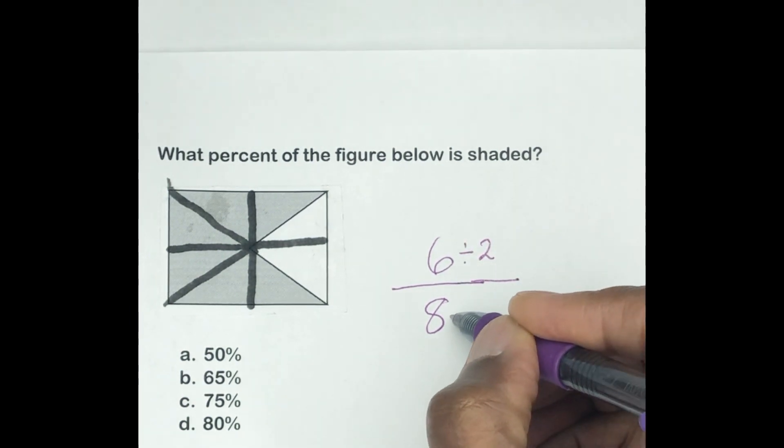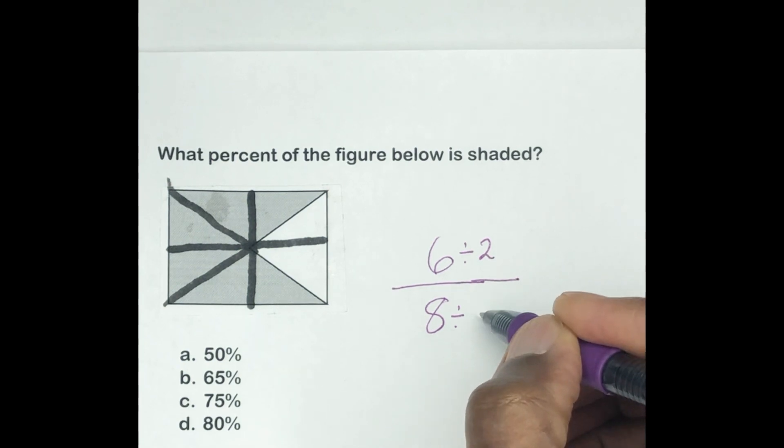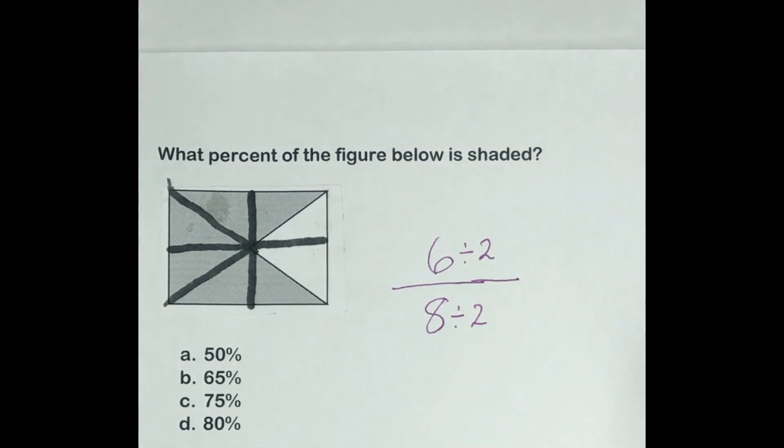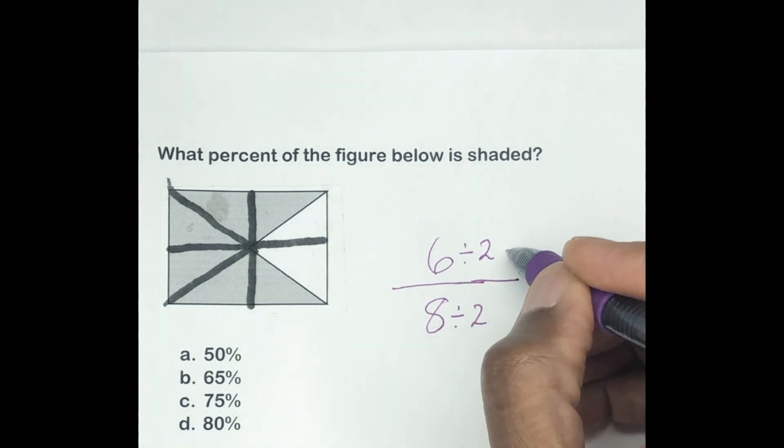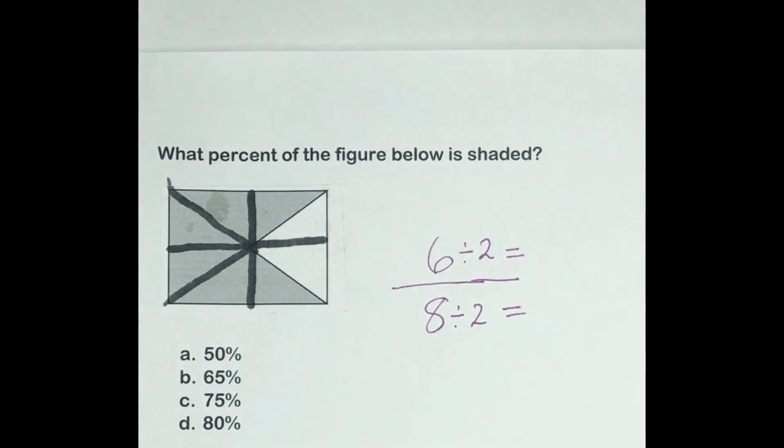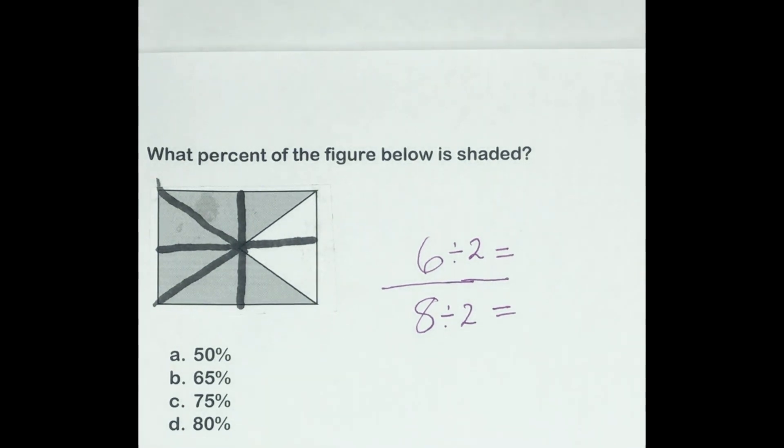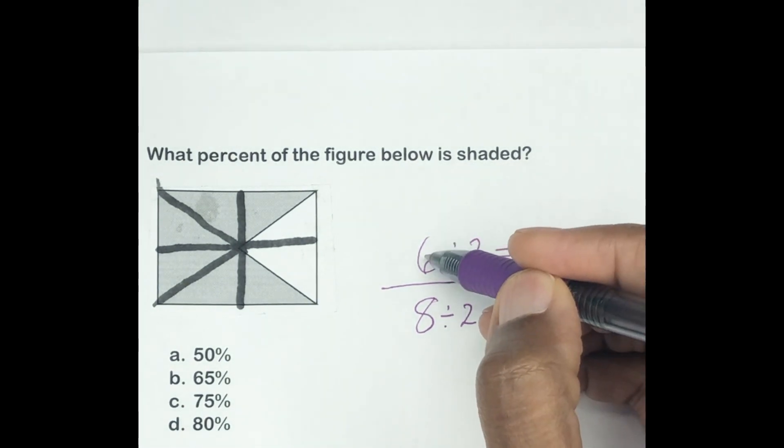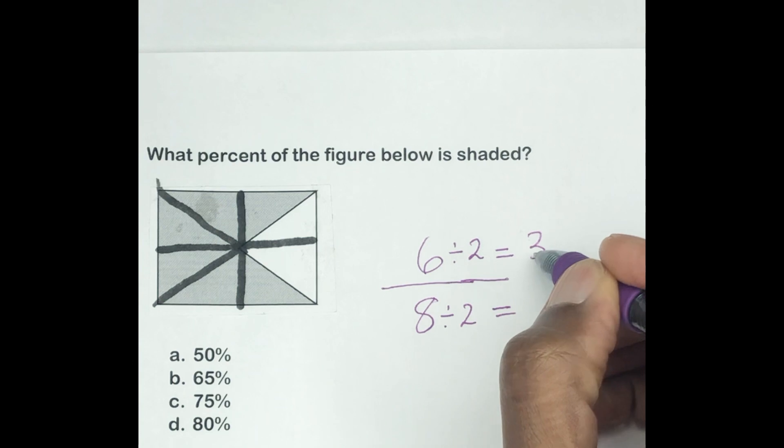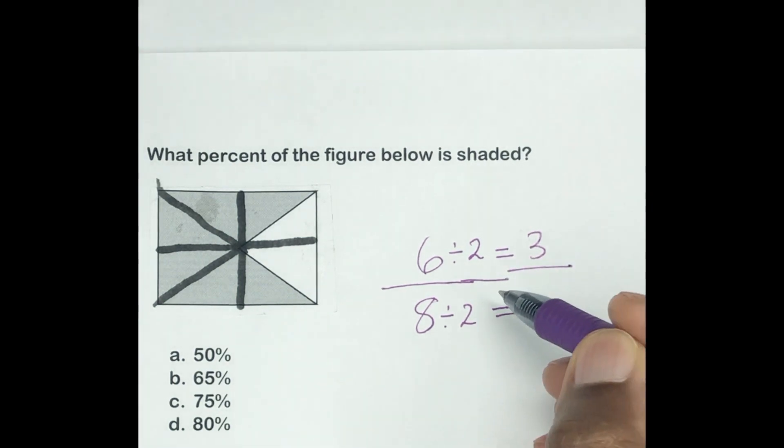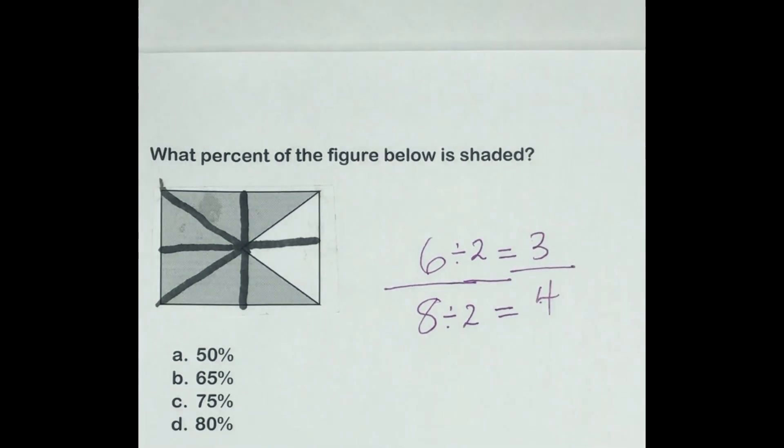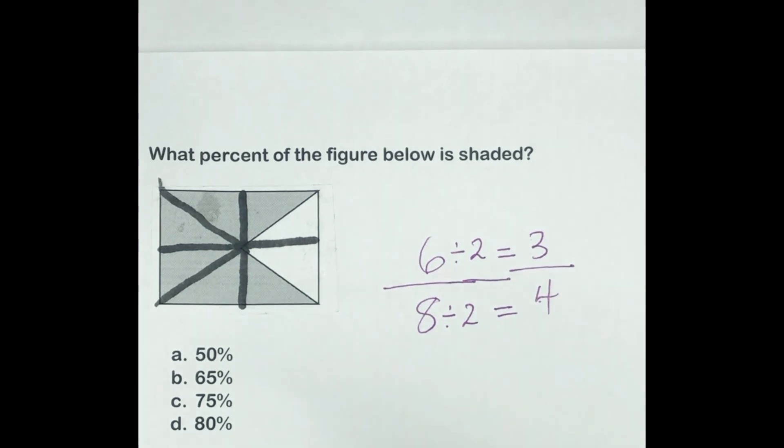So because it's the 2 times table, we're going to divide both the numerator and the denominator by that times table. So we're going to divide 6 divided by 2 and the 8 divided by 2. 6 divided by 2, what is that? So that's a 3. And 8 divided by 2 is what? So that's a 4. Okay, that's 3/4. That still doesn't give me any of the percentages here, does it?